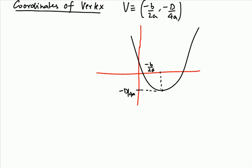Let's derive why the coordinates of the vertex of a parabola are (-b/2a, -D/4a). When we draw a parabola we use this formula to find the coordinates of the vertex. Now let's see how we get to this formula — how we found that the coordinates of the vertex are -b/2a and -D/4a.